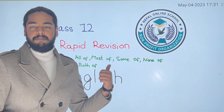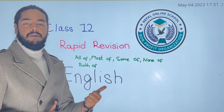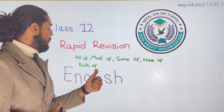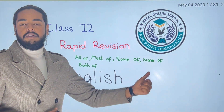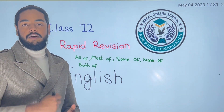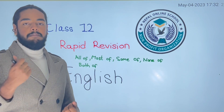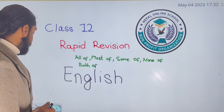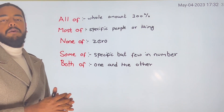Hello everyone, welcome to this video. This is a rapid revision class on Class 2 verbs. Today's topic covers: all of, most of, some of, none of, and both of. If you are liking these videos, please do give us a thumbs up. Okay, let's get started.